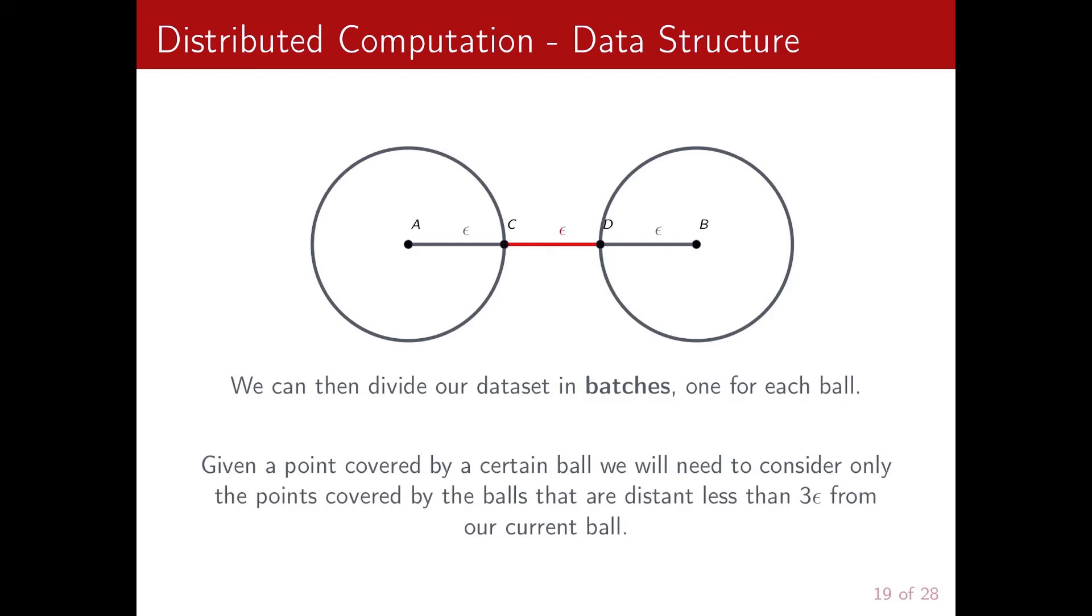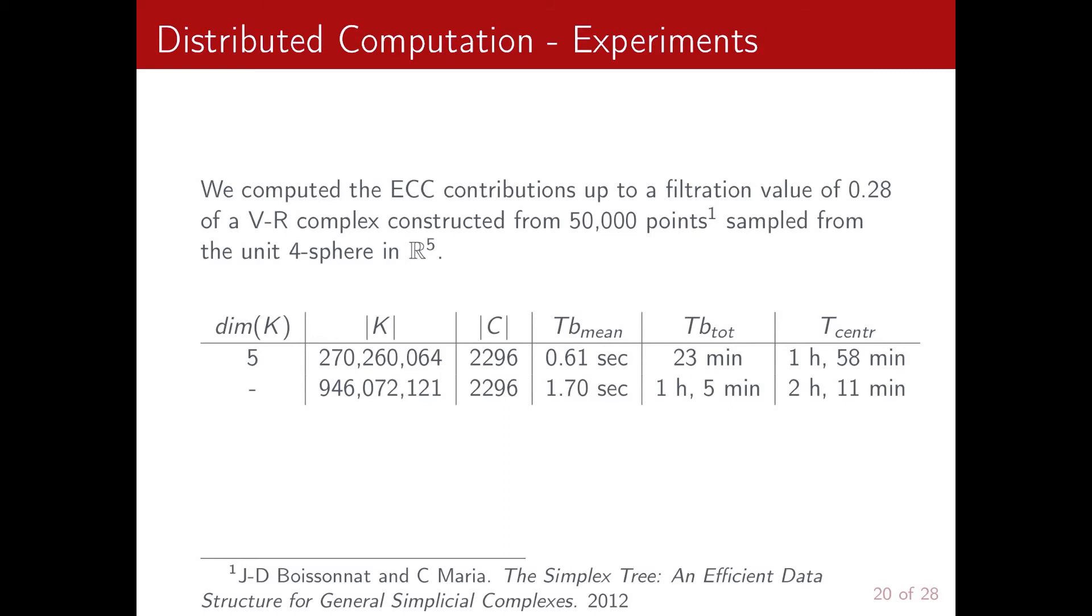So we ran some experiments using 20 CPU cores of the Sunbird computer cluster from Swansea University. We computed the Euler characteristic curve's contributions for a Vietoris-Rips complex constructed from 50,000 points sampled from the 4-sphere in R^5.